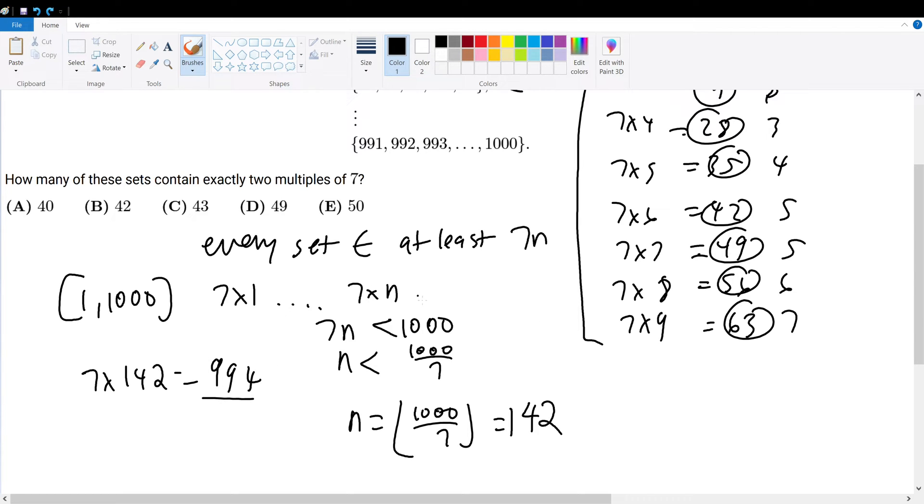But since every single set has at least one multiple of 7, then 142 minus the 100 sets available would give you 42, meaning that after distributing 100 multiples of 7s to each of the 100 sets, we still have 42 left over.